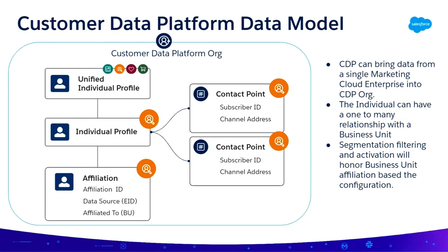Once you harmonize the data it's difficult to disaggregate during activation — you can still use the rich data to segment, but when activation happens only the relevant contacts are activated. Looking at the data model: at the top there's a unified individual profile, the harmonized reconciled version of that person based on your match rules, coming from different source systems — essentially an identity graph. Connected to that are several aspects of identity ingested from Marketing Cloud.